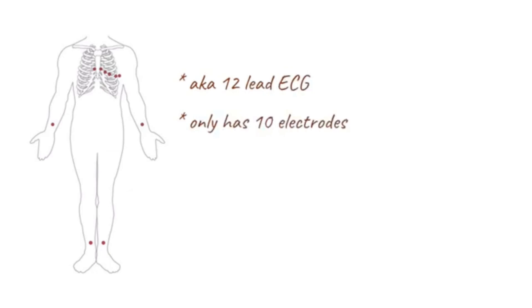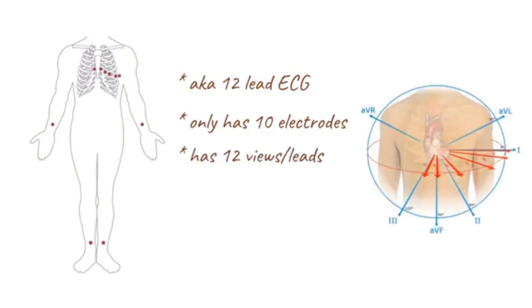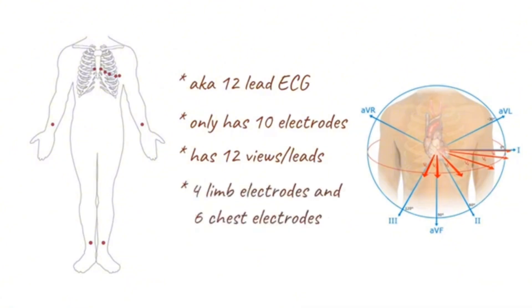These 10 electrodes allow the electrical activity of the heart to be viewed from 12 different positions, also called leads, thus the name 12-lead ECG. The 10 electrodes comprise 4 limb electrodes and 6 chest electrodes.